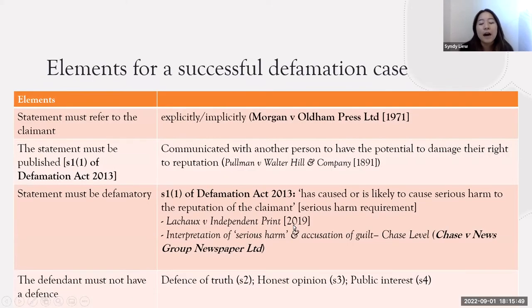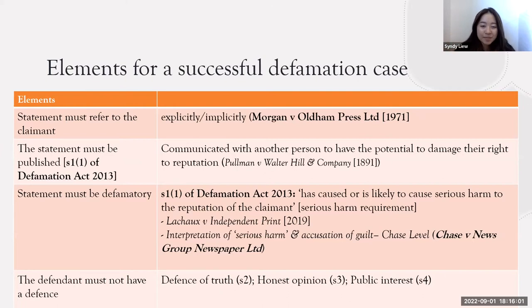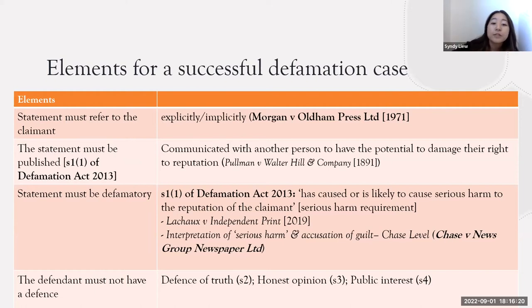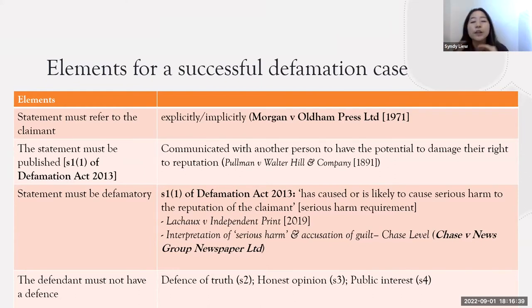Here are the different elements for a successful defamation case. In first year law, I found that it is a lot of checklists. For defamation, there are different elements you have to fulfil and prove in order for a defamation case to succeed. There are four main requirements. Firstly, the statement must refer to the claimant either implicitly or explicitly. In the Johnny Depp case, the entire article never explicitly mentions Johnny Depp's name, but the jury established that the article implicitly refers to Johnny Depp.